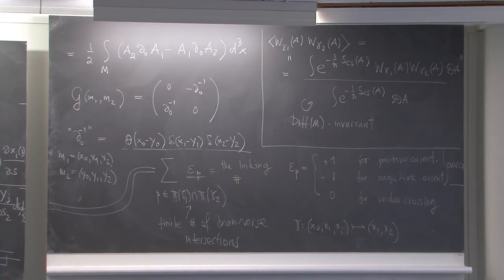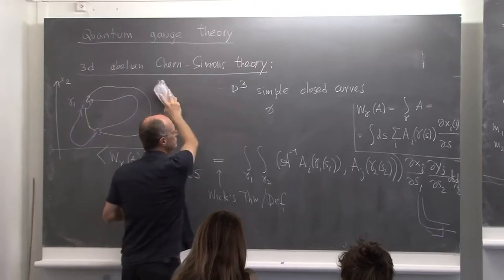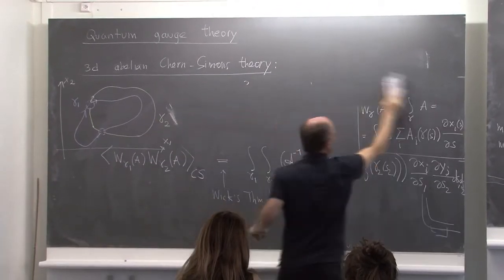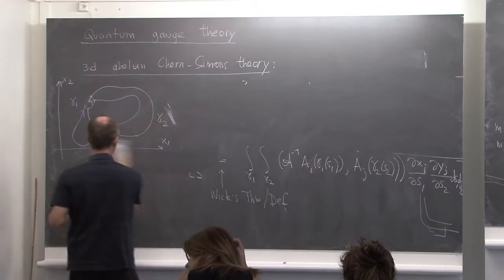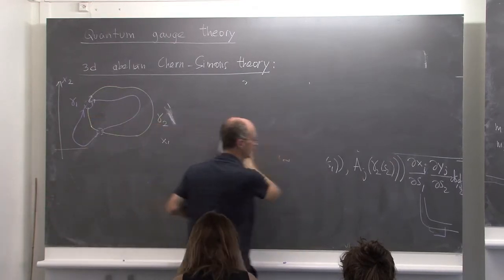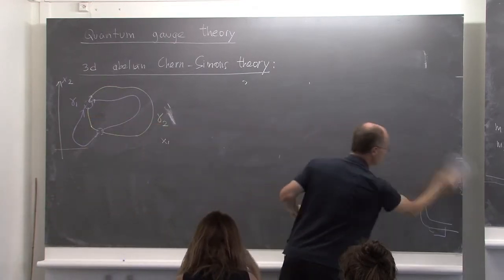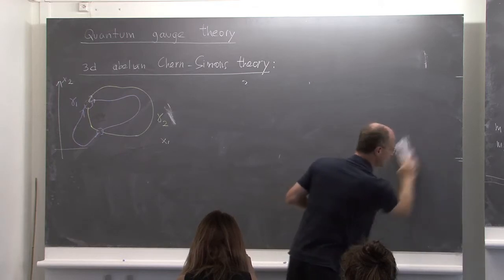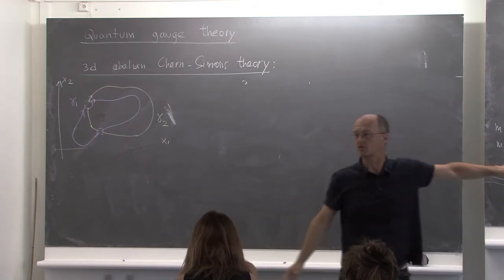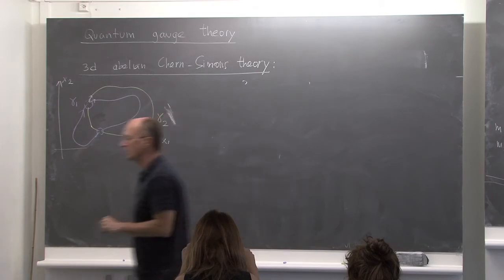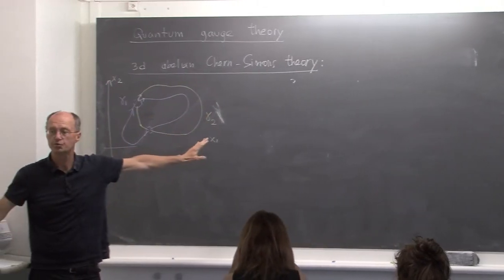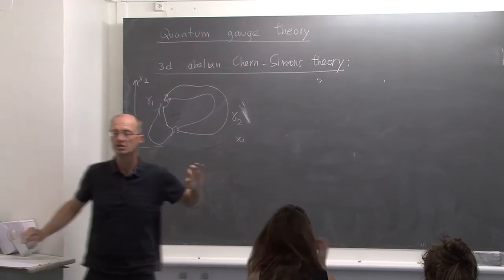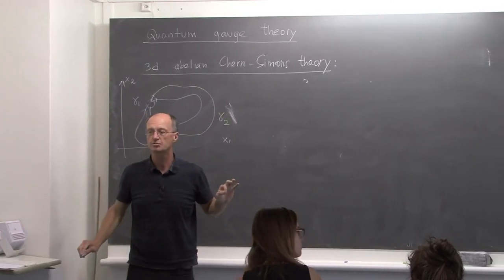That was a very beautiful calculation, and it will be an inspiration next time when we look at something similar in non-Abelian Chern-Simons theory. But let's also give a calculation which fails or doesn't clearly make sense in the Abelian Chern-Simons theory.